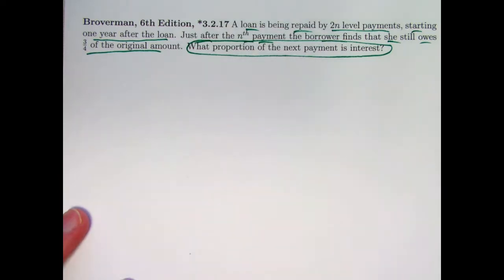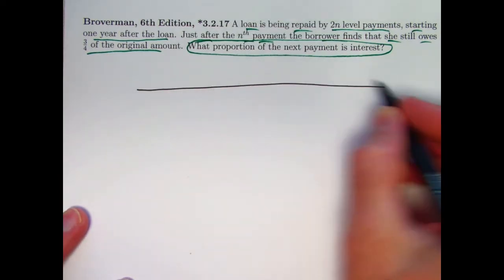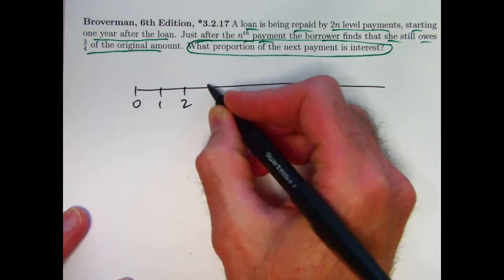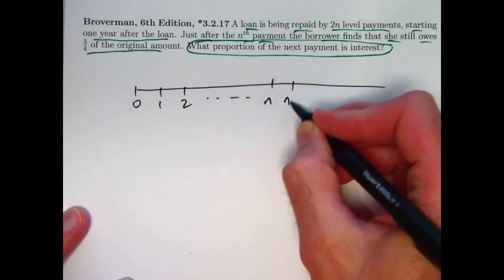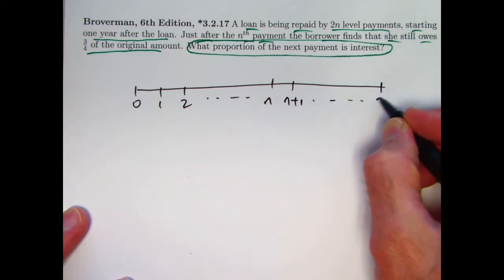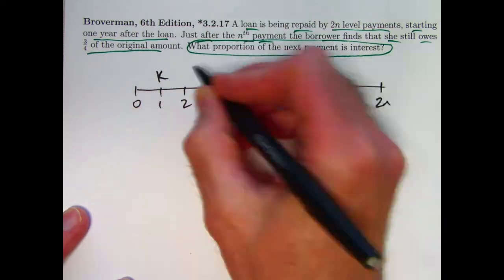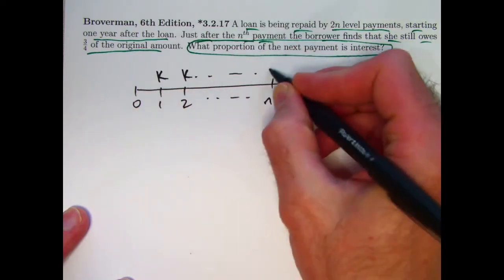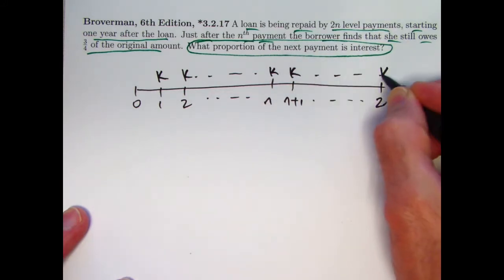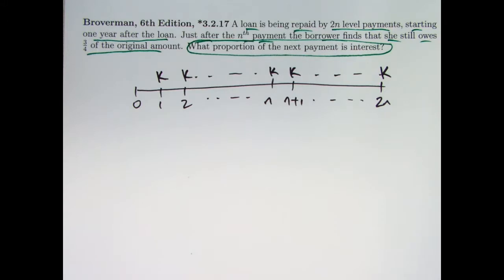It wasn't real clear to me how to do this, so I just started writing some things down. Sometimes that's the best problem-solving strategy. I went ahead and made a number line. We've got 2N payments, level payments, starting one year after the loan is made at time one. Call those level payments K, as we often do.